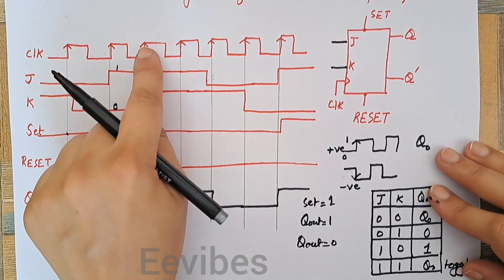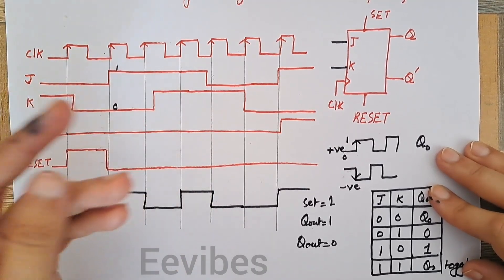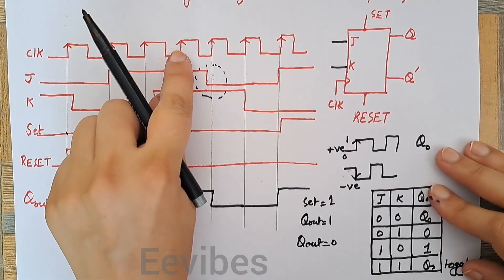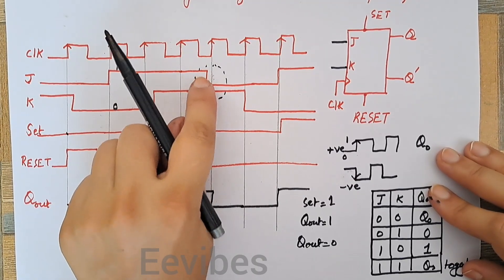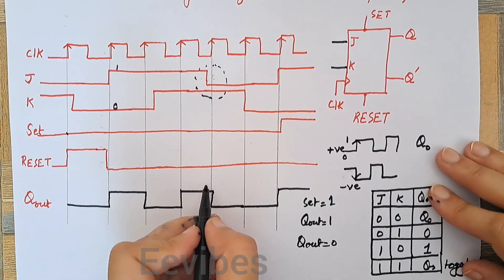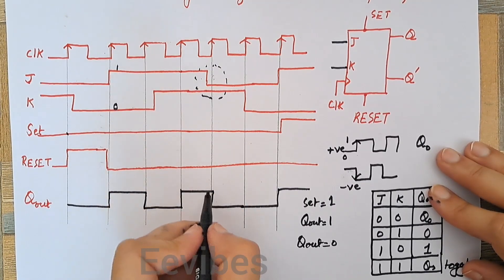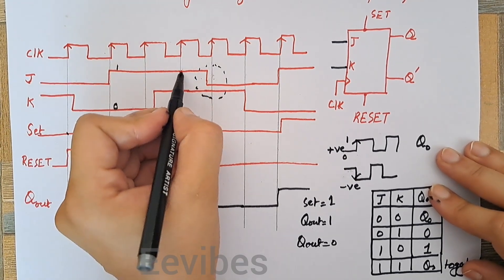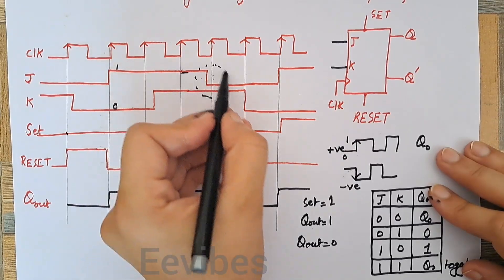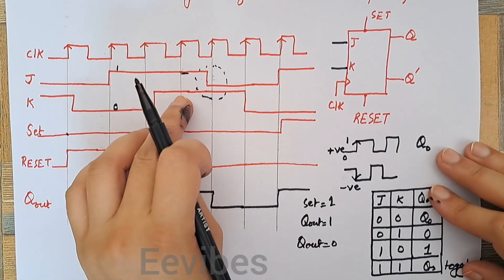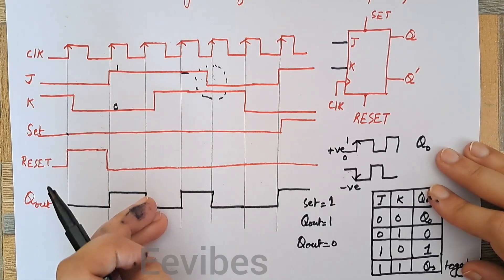No matter if J and K inputs are changed after the arrival of the rising edge, the output is based on the values at the rising edge. For example, after the arrival of the rising edge, the J input switched its state from 1 to 0 while K was equal to 1 — but the output was not changed because at the rising edge J was equal to 1 and K was also equal to 1, which resulted in toggling the output from 0 to 1.